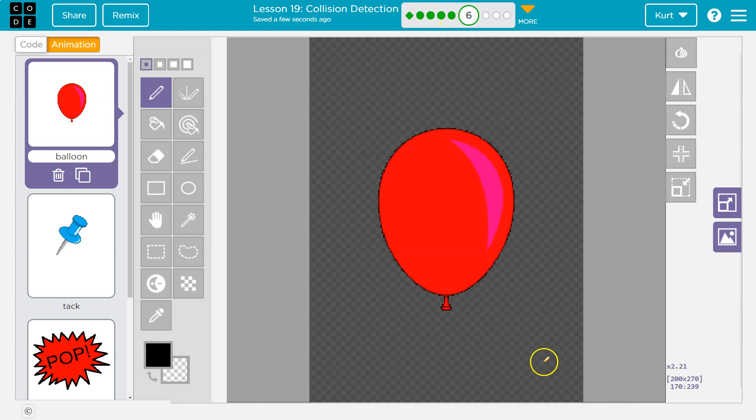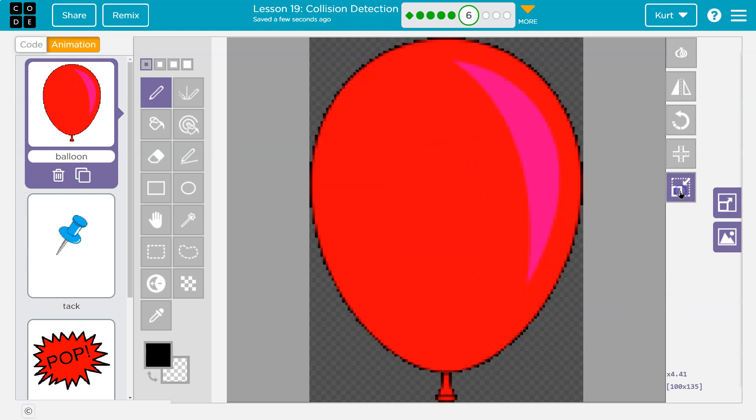So when we do these touching, it considers the whole size of the image. I do know over here, crop to sprite, well, I think, yeah, it at least will make it a lot more accurate. It's not perfect, right?